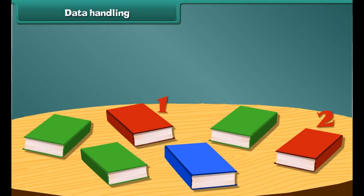Friends, now let's count and arrange these books in the bookshelf. How many red colored books are there? 1 and 2. There are 2 red books.